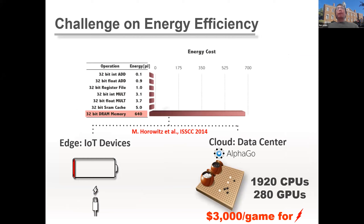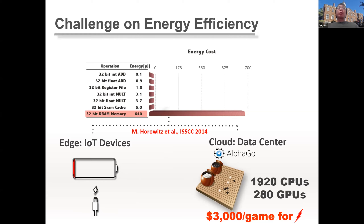If we cannot fit the entire model into SRAM, we need frequent access to DRAM, which causes very high energy cost. This makes deploying deep learning models on edge devices or in data centers very inefficient. At the edge, high energy consumption quickly drains the battery of mobile and embedded devices.